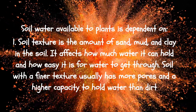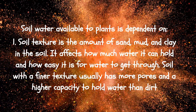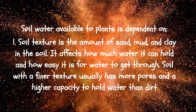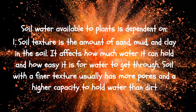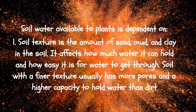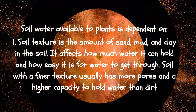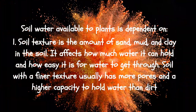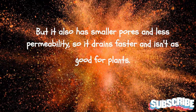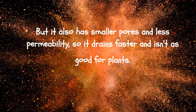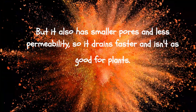Soil water available to plants is dependent on several factors. Soil texture is the amount of sand, silt, and clay in the soil. It affects how much water it can hold and how easy it is for water to get through. Soil with a finer texture usually has more pores and a higher capacity to hold water than soil with a coarser texture, but it also has smaller pores and less permeability, so it drains slower and isn't as good for plants.